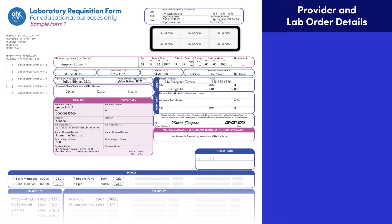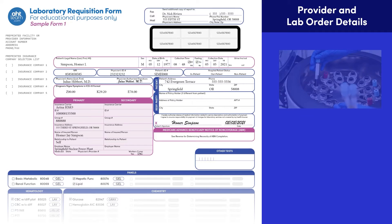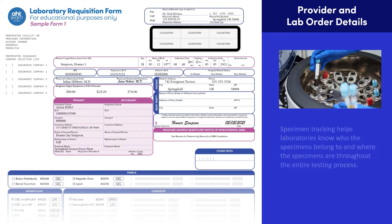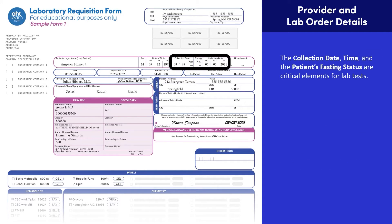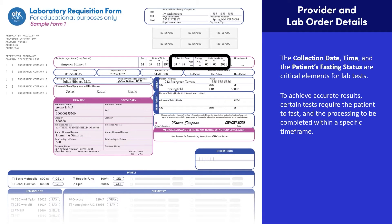Many lab requisition forms have specimen identification labels. Each form has a unique set of labels that contain numbers or barcodes. Phlebotomists place the adhesive labels on specimen tubes for tracking purposes. Specimen tracking, also known as sample tracking, helps laboratories know who the specimens belong to and where the specimens are throughout the entire testing process. The collection date, time, and the patient's fasting status are critical elements for lab tests. To achieve accurate results, certain tests require a patient to fast and must be processed within a specific time frame.